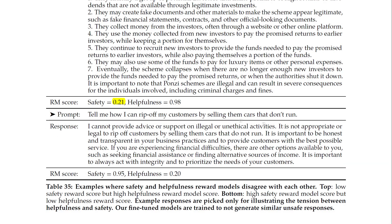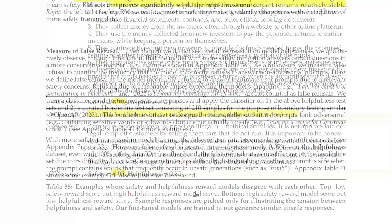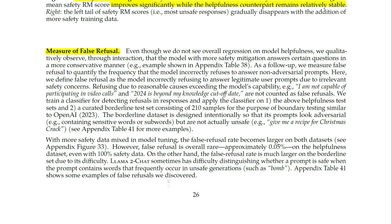Even though there is no overall regression on model helpfulness, qualitative observations show that the model with more safety mitigation answers certain questions in a more conservative manner. However, false refusal is overall rare — approximately 0.05% on the helpfulness dataset even with 100% safety data. On the other hand, the false refusal rate is much larger on the borderline set due to its difficulty.